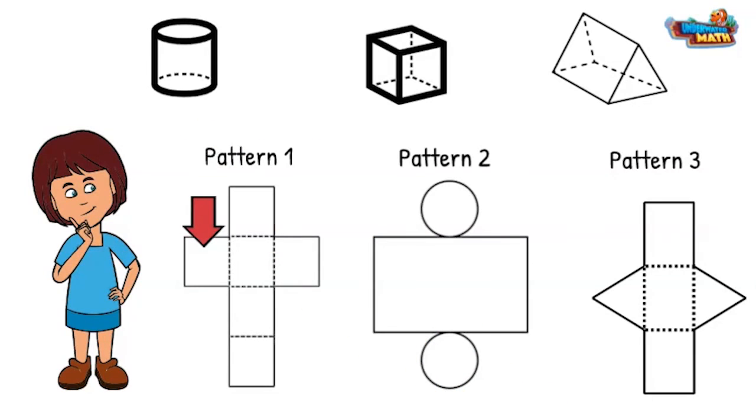Pattern one is made up of all squares. The three-dimensional shape with all square faces is a cube.